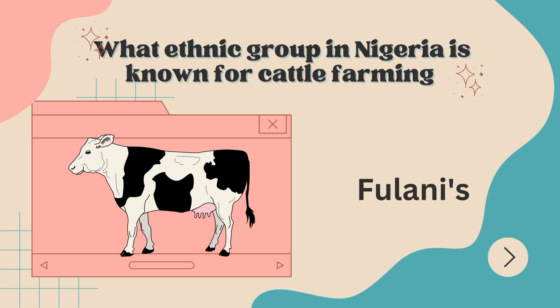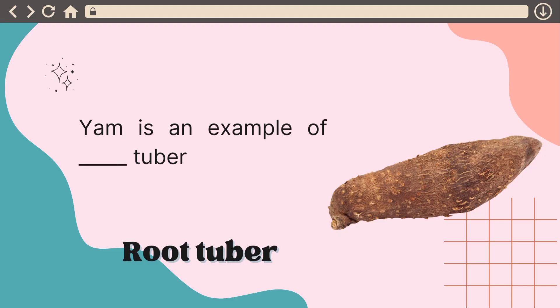The next one says: what ethnic group in Nigeria is known for cattle farming? And it's the Fulani, that's why they call them Fulani herdsmen. It is not Hausa, they are the Fulani, they are in charge of cattle rearing — that's cow.